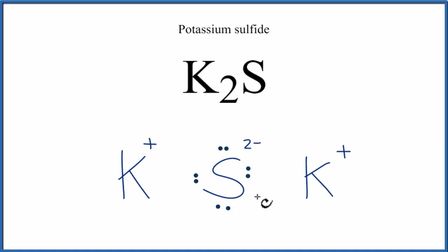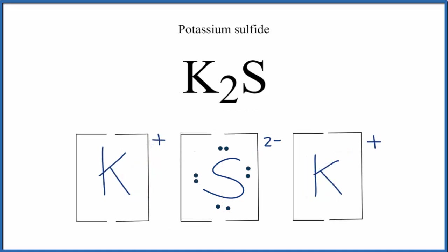Let's put brackets around the sulfide ion here, and you'll often see them around the positive ions. That makes this the Lewis structure for K2S, potassium sulfide.